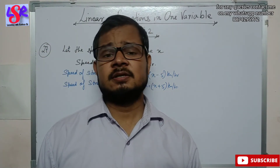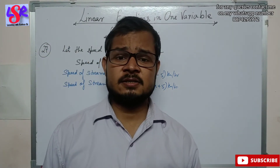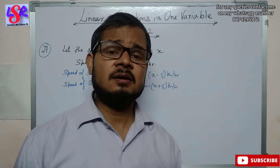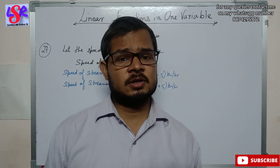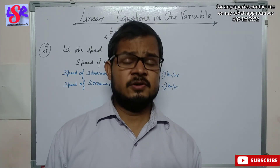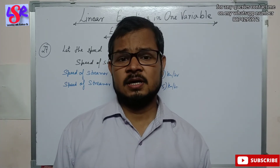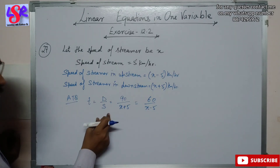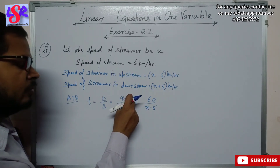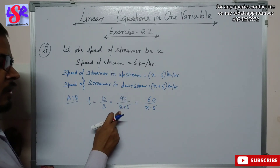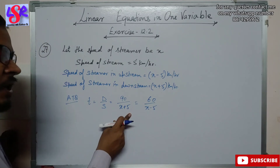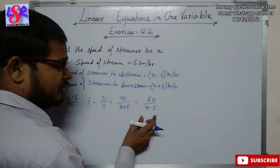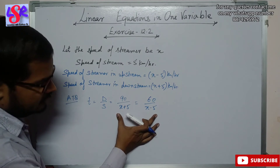The streamer takes the same time to travel 90 kilometers downstream and 60 kilometers upstream. Using the formula time equals distance upon speed: time for downstream is 90 divided by (x plus 5), and time for upstream is 60 divided by (x minus 5). Since the times are equal, we set these expressions equal to each other.